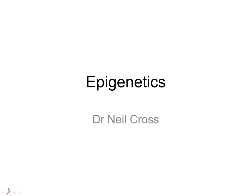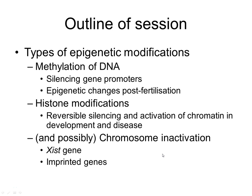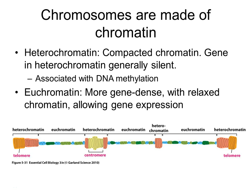This is a quick revision video on the epigenetics lecture. As a reminder, if you look down the length of the chromosome, we've got bits of chromatin that are euchromatin, which tend to be the regions where you've got expressed genes, and you've got heterochromatin, which tends to be silenced chromatin. Then there are telomeres at the end where there are no genes — just protected bits of DNA to protect the end of the chromosomes.